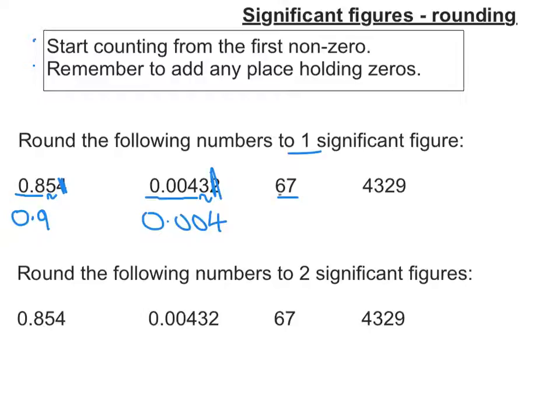67, well the six is my significant figure and the seven tells me to round up or stay the same. So it's seven, so I do round up, so I get seven. And while that's my one significant figure, I have to put a zero in as my placeholder because 67 rounds to 70, not to seven.